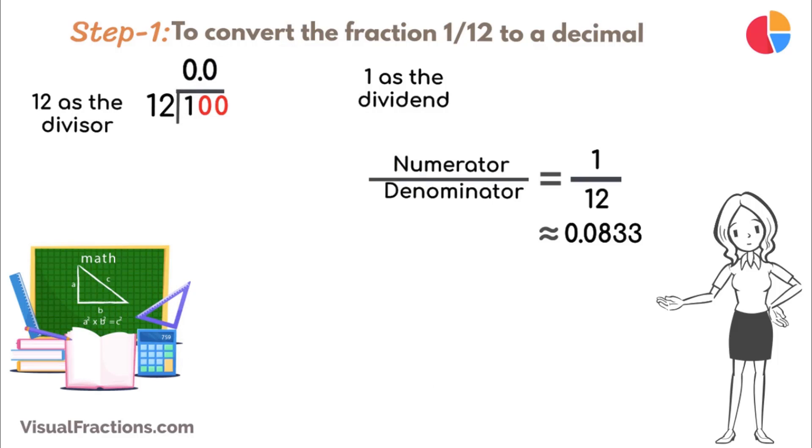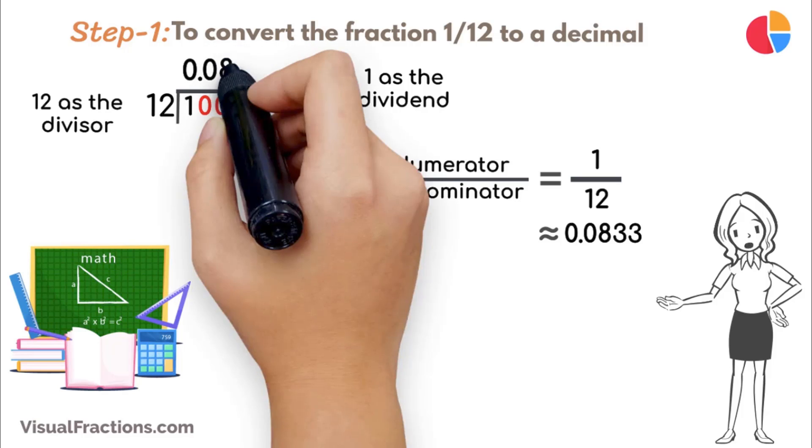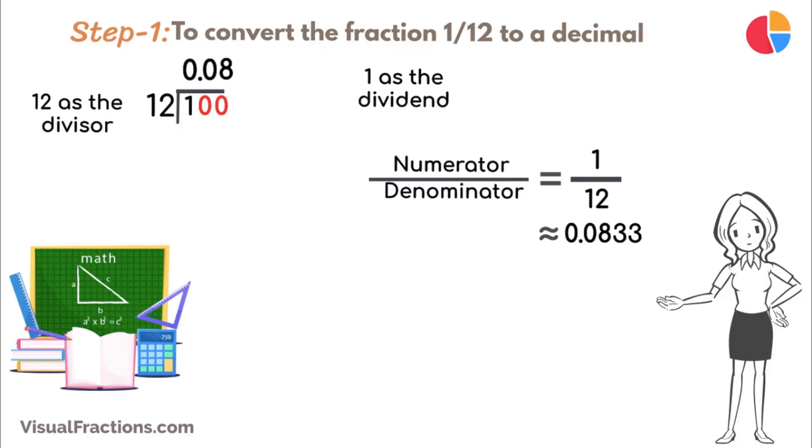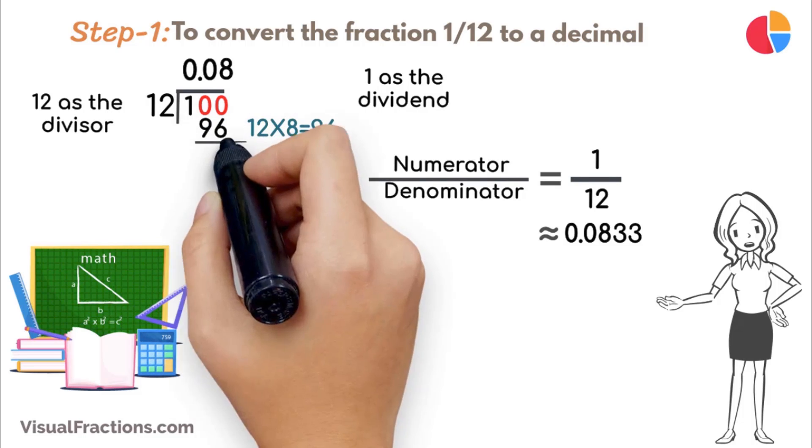Bring down another 0 to make it 100. 12 goes into 100 eight times, putting 0.08 in our quotient. Multiply 12 by 8 to get 96, and subtract this from 100, leaving a remainder of 4.